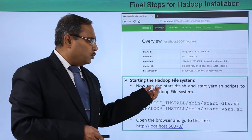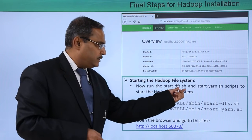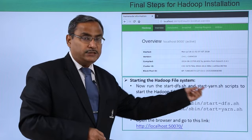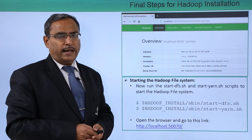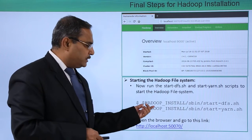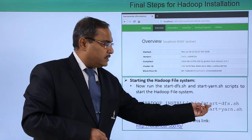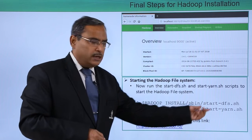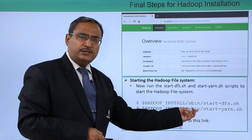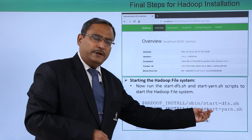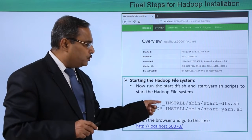Now, run the two shell script files. One is start-dfs.sh and the other is start-yarn.sh. These scripts will start the Hadoop file system. Issue the commands: $HADOOP_INSTALL/sbin/start-dfs.sh and $HADOOP_INSTALL/sbin/start-yarn.sh. These two shell script files are to be executed.